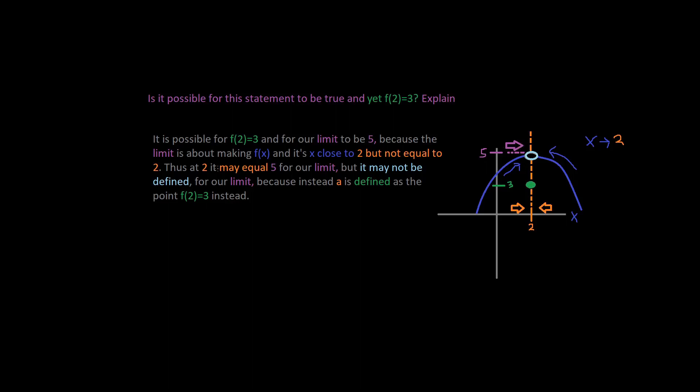It says because the limit is about making the function and its x close to 2 but not equal to 2. Like we explained earlier, right? The x is getting closer and closer to our limit, which is 5, right?